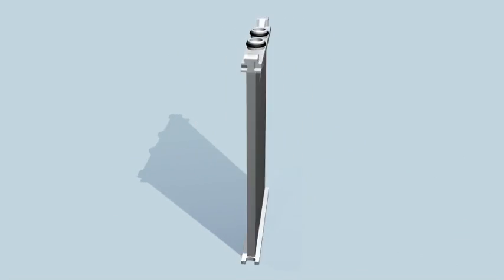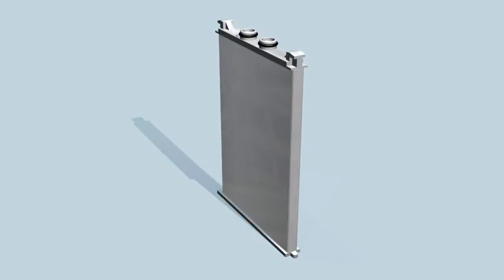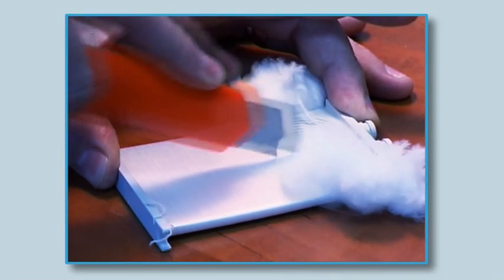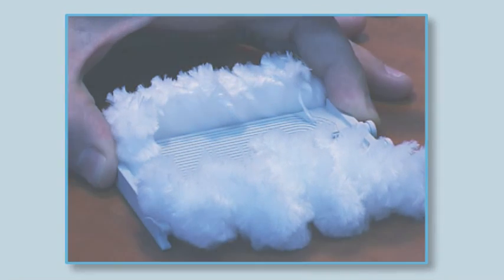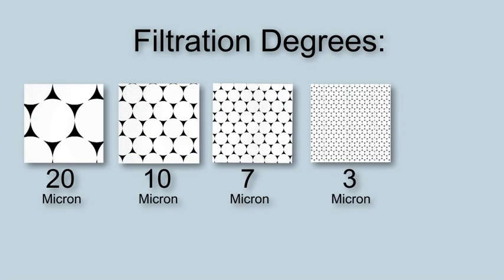The innovative filter media consists of a groove rigid plastic body over which multi-layer textile threads have been wound. The thread type and tension, together with the number of layers, determines the quantity and the size of pores between threads, defining the filtration degree to 20, 10, 7, 3 and 2 micron.